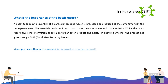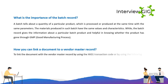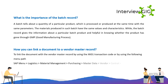How can you link a document to a vendor master record? To link a document with a vendor master record, use the XK01 transaction code or the following menu path: SAP Menu > Logistics > Material Management > Purchasing > Master Data > Vendor > Central > XK01 Create.